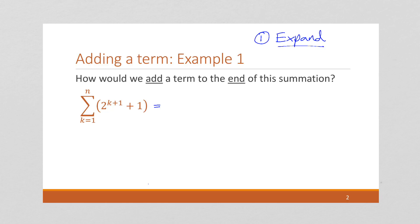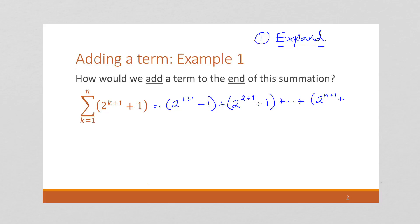Notice I'm starting k at 1, so this is going to be 2^(1+1) + 1. Then the second term will be 2^(2+1) + 1, and so on. We're going to end with k being n, so 2^(n+1) + 1. So, this is what our sum looks like.